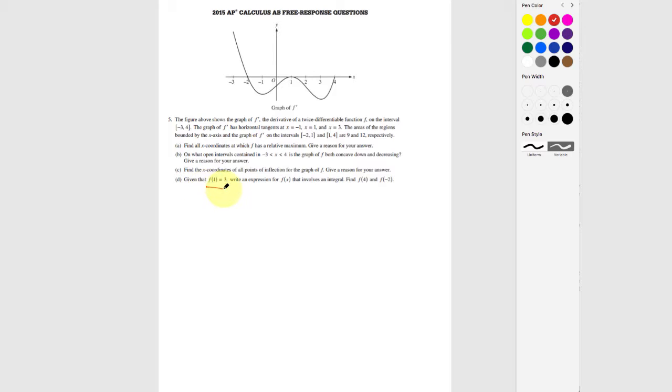They tell you that f of 1 is 3 and that you need to find f of 4 and f of negative 2. What's given in the graph is f prime, so we know that the antiderivative of f prime is going to bring us back to f.